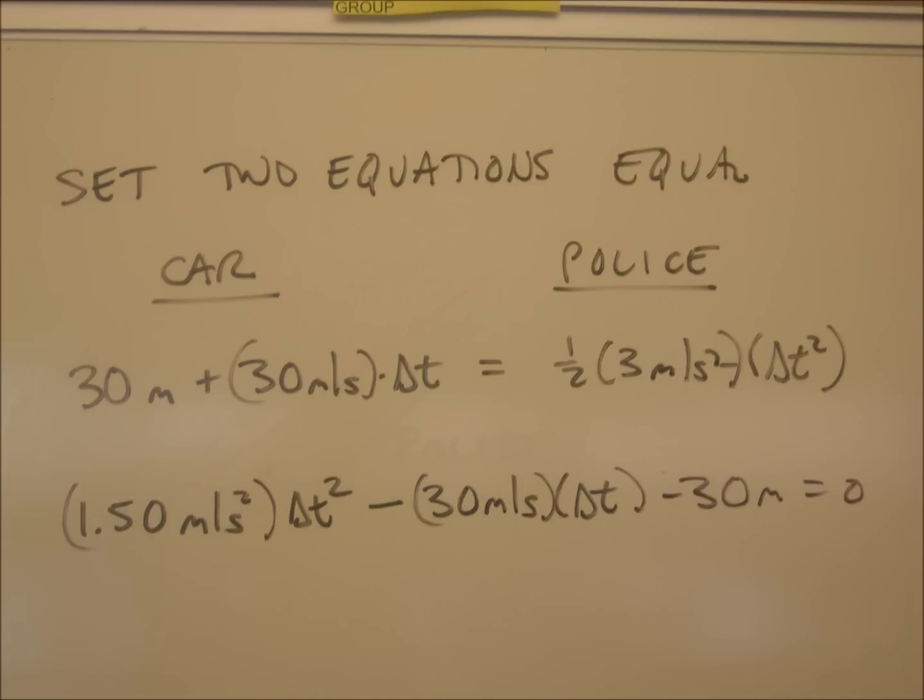If the times for the two vehicles are the same, then the positions are the same as well. So we are allowed to set the two equations we've built equal to each other. On the left, I have the equation we built about two minutes ago for the car: 30 meters plus 30 meters per second Δt. We're going to set that equal to the expression we just derived: ½ times 3 meters per second squared times Δt squared.